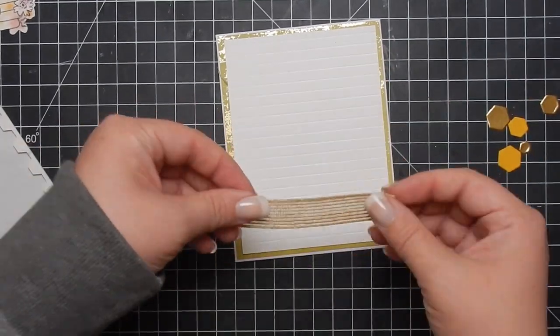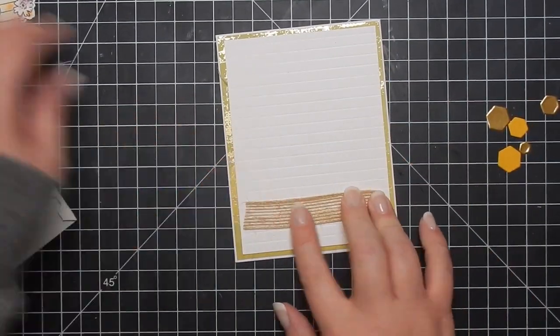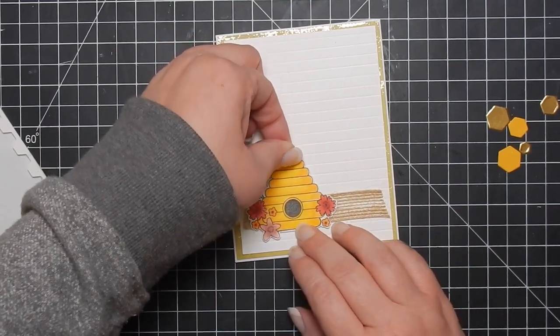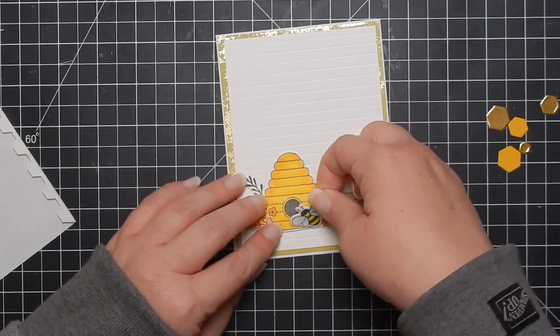Go ahead and attach that scored piece and then here I'm just taking some ribbon from my stash to give the card a little bit of interest and go ahead and attach all my pieces.